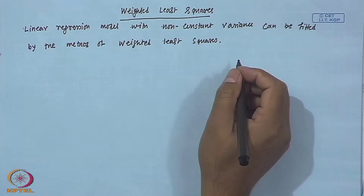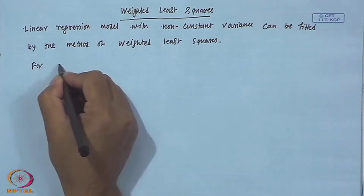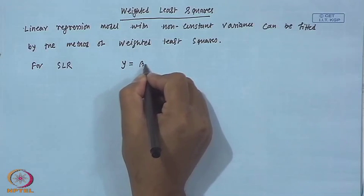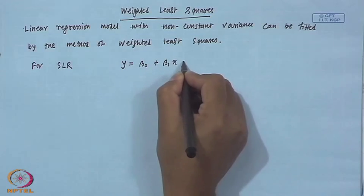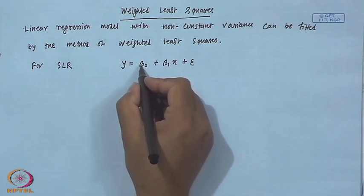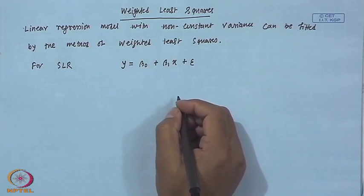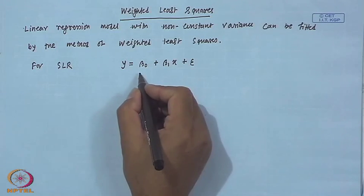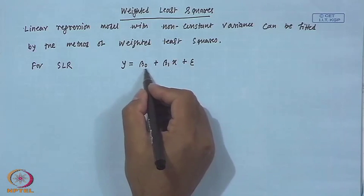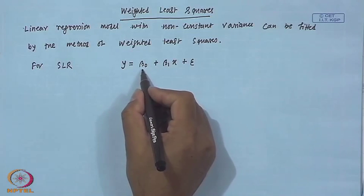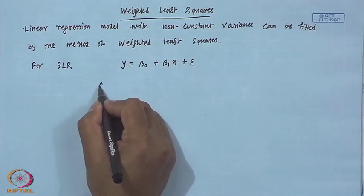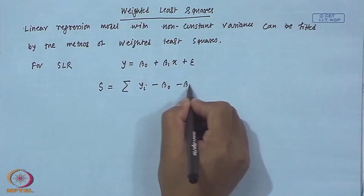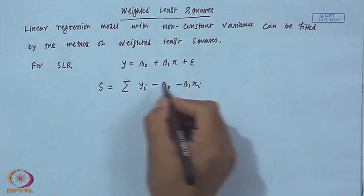For the simple linear regression model, the model is y = β₀ + β₁x + ε. In ordinary least square, we estimate the regression coefficients β₀ and β₁ by minimizing the quantity S = Σ(y_i − β₀ − β₁x_i)².